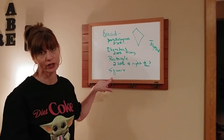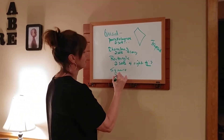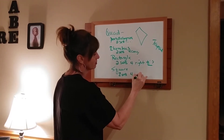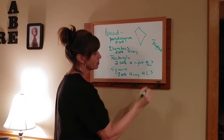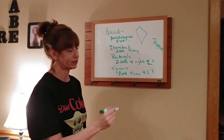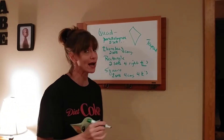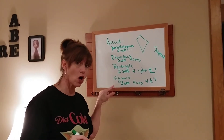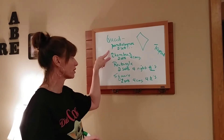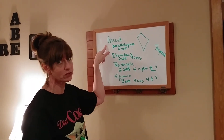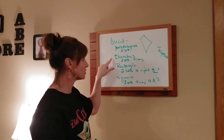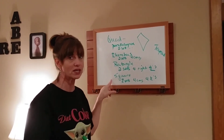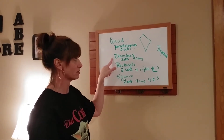And then last but not least, your square: two sets of parallel lines, four congruent sides, four right angles. So you can see that they build. Therefore, I'm allowed to say that all squares are rectangles, all squares are rhombuses, all squares are parallelograms, all squares are quadrilaterals. But I cannot say all rhombuses are squares, because you don't have all of the attributes of a square in a rhombus.